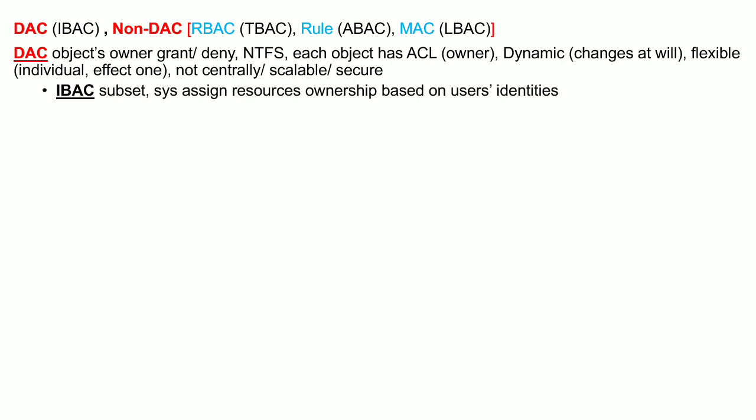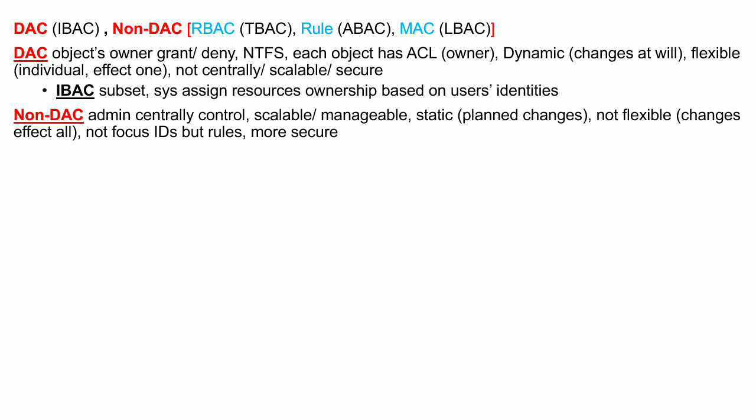Discretionary access control models are not managed centrally, and therefore are not as scalable or secure compared to non-discretionary access control models. One sub-model is the identity-based access control model, which is a subset of the discretionary access control model where the system assigns resource ownership based upon user identities.